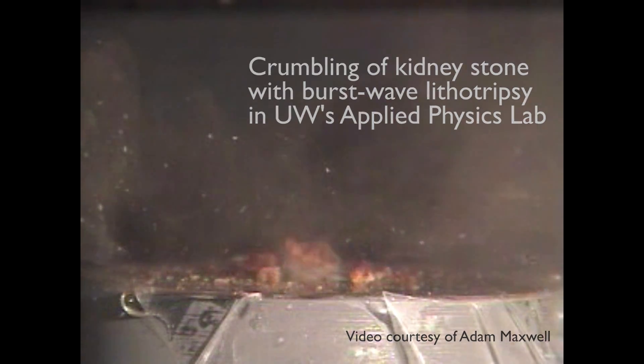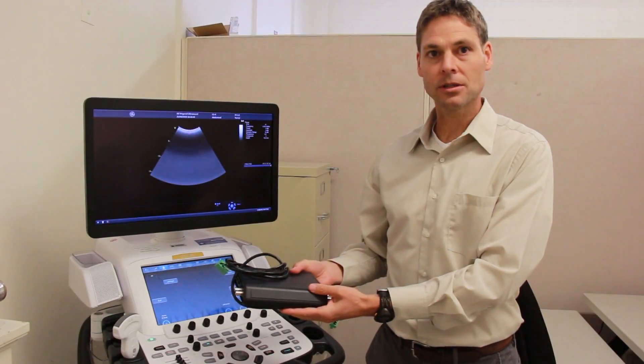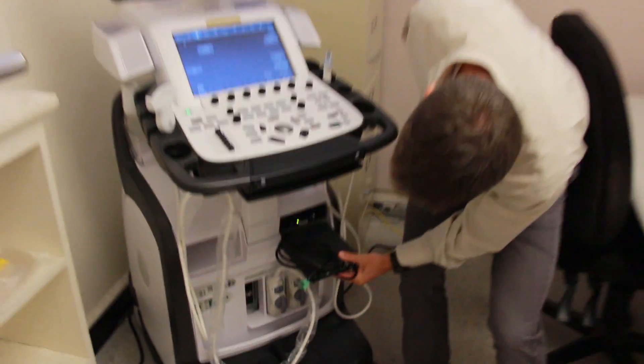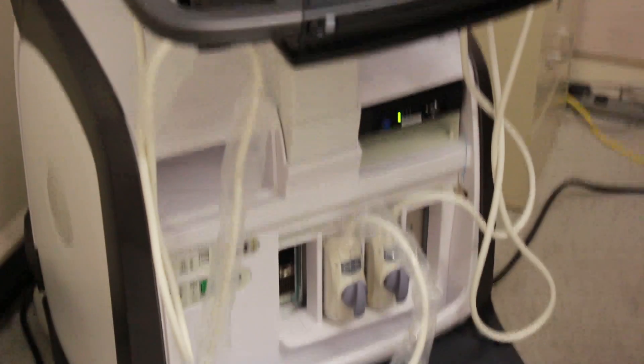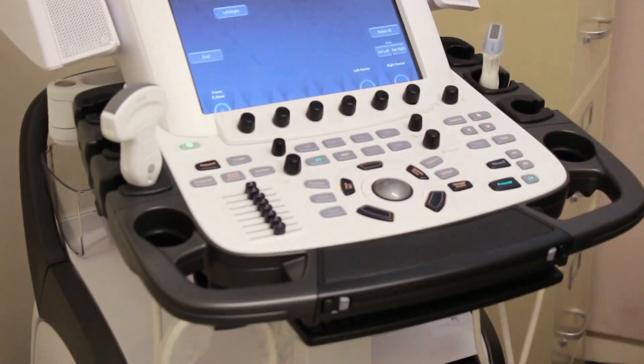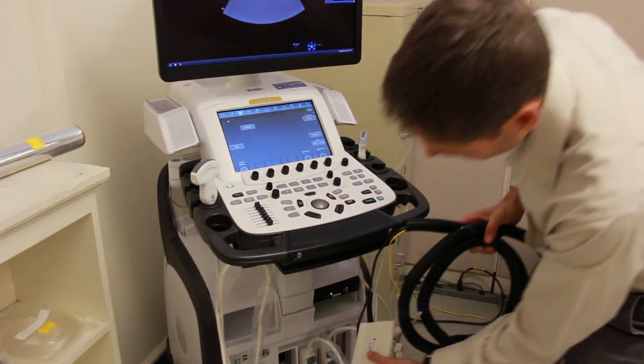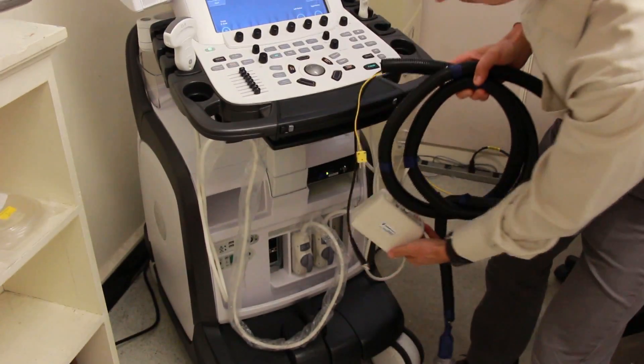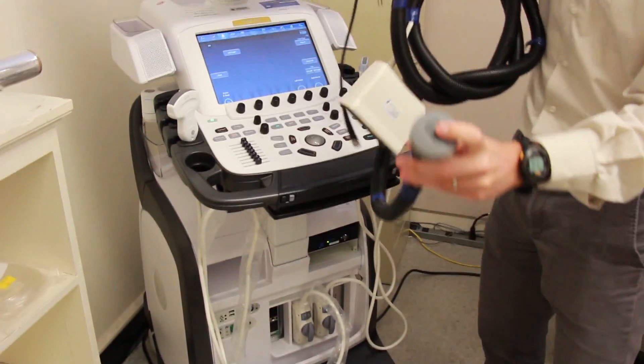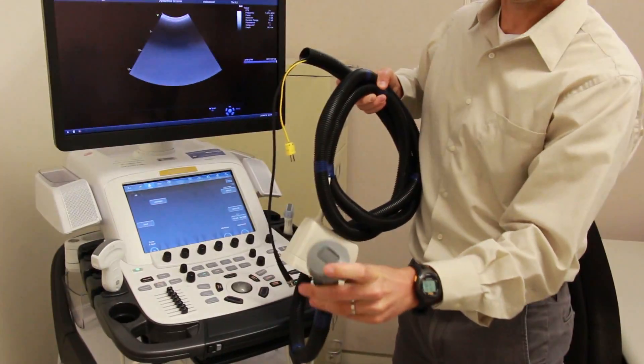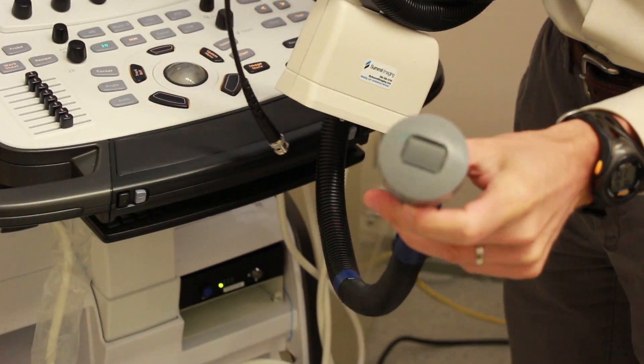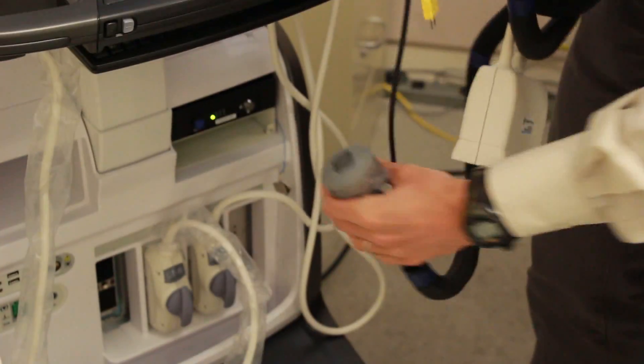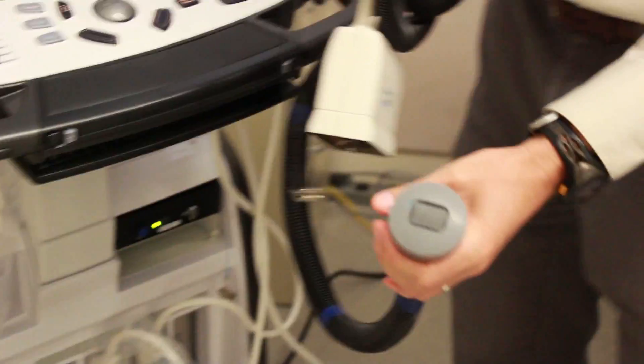We take a small amplifier and power supply this size that will slip into the box right here, and we take a probe that we made. This is the same diagnostic probe, plugs in there, and is in the center of our probe. And then the annulus around it is our therapy probe. The therapy probe is powered by that small power supply that fits in there.